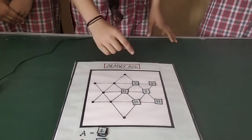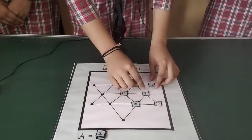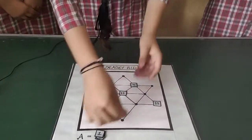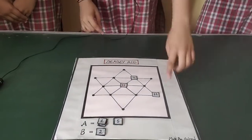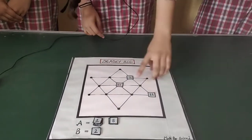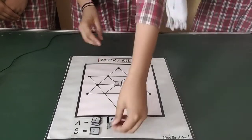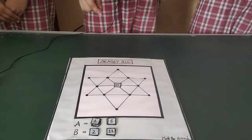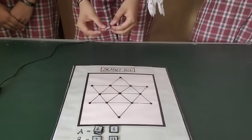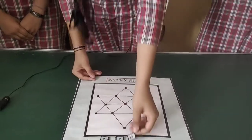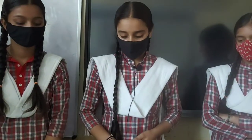Again A team collects their numbers in a line: 5, 7, and 10. Then B team collects 11 and 4. At last, A team collects 13, which is the middle one and the deadly red. So A team is the loser and B team is the winner.